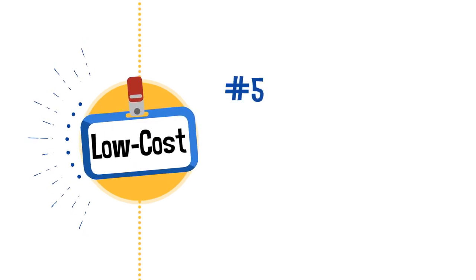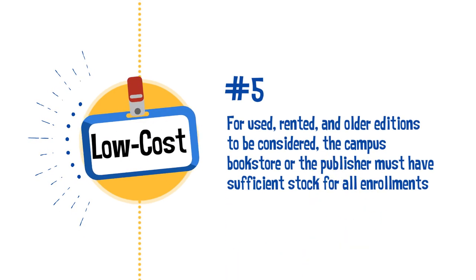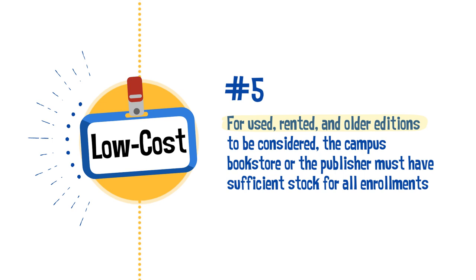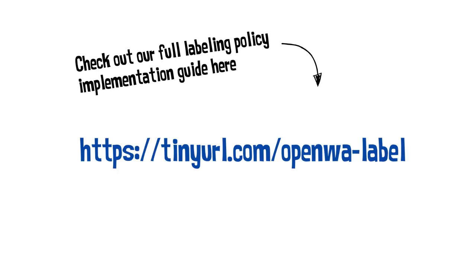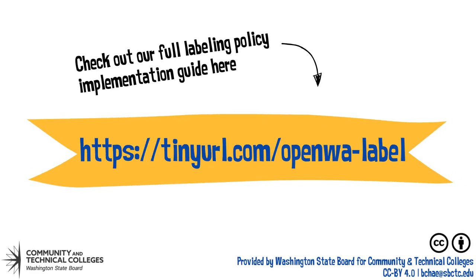Number five: you can consider the cost of used, rented, and older editions of the materials. However, for these to be included in low-cost labeling, the campus bookstore or publisher must have sufficient stock for all students enrolled. To learn more, check out our full labeling policy implementation guide at tinyurl.com/openwa-label. It features scenarios and tools that help you select a label that's suitable for your course. Thanks for watching, and happy labeling!